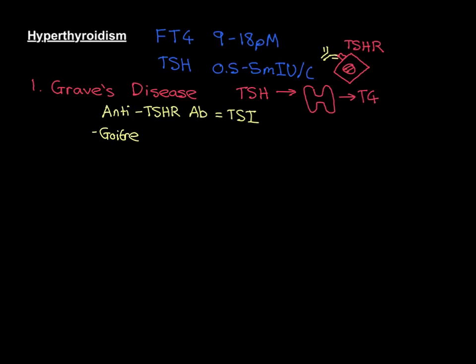Graves' disease is the number one cause of hyperthyroidism. We can test for this antibody with a blood test — we can test for the presence of anti-thyroid-stimulating hormone receptor antibody, and we can quite accurately determine whether someone's hyperthyroidism is due to Graves' by looking for the presence of this autoantibody.